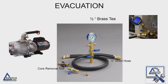Make sure you have a good half-inch brass tee, a short half-inch hose, core removal tools, a good vacuum pump, and a good micron gauge to show your vacuum level. Always do a good evacuation on a system to alleviate the problems shown in this video.